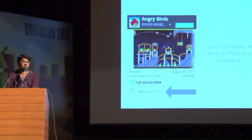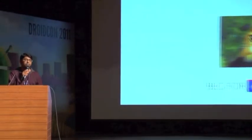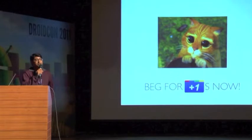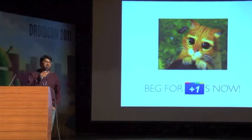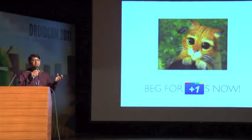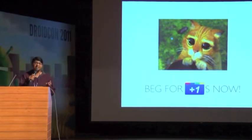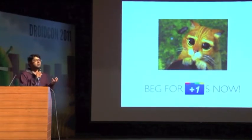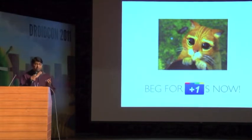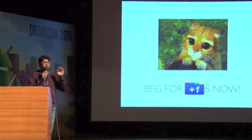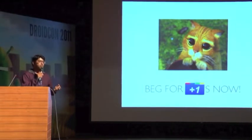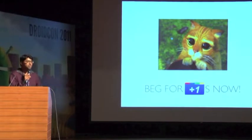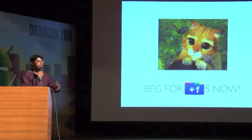My advice: until Google fixes this, you can get a head start right now — start begging for plus ones now, because soon this is going to be the next ratings game. From social network theory, it's better to own a big chunk of a small subgroup, like college students, than to own a small percentage of a very large market. If you can own 30% of a sub-market, that is much better than owning 1% of a really large 200 million people market where they're all widely spread.